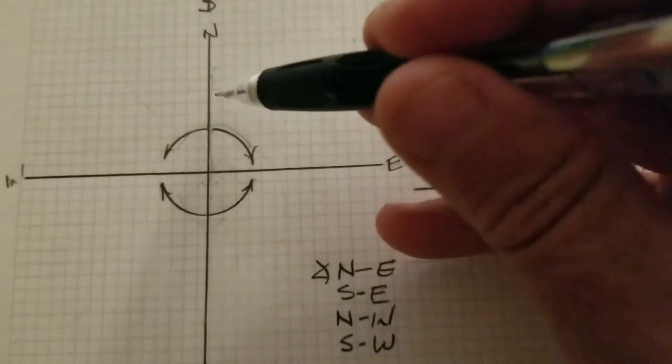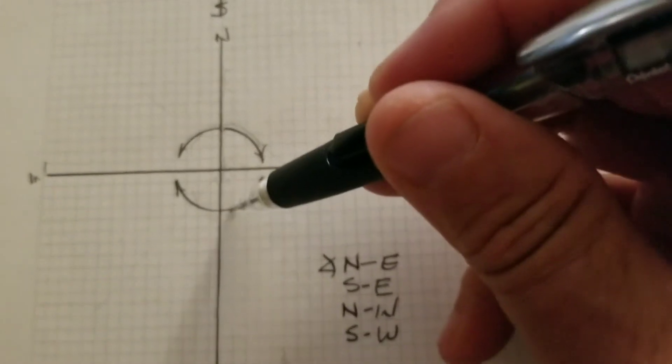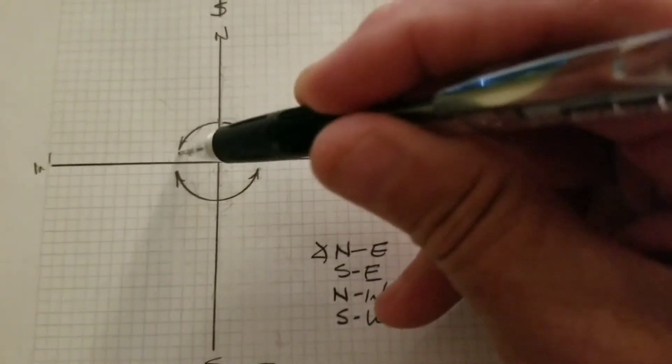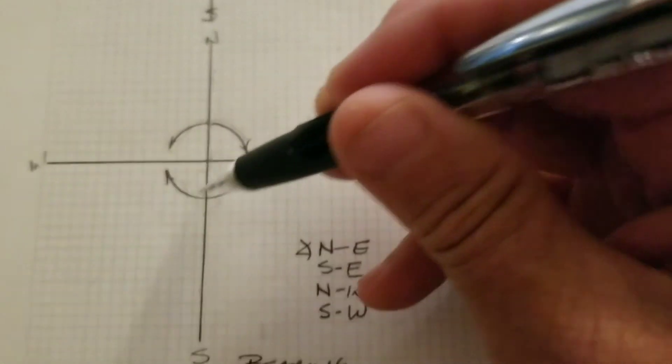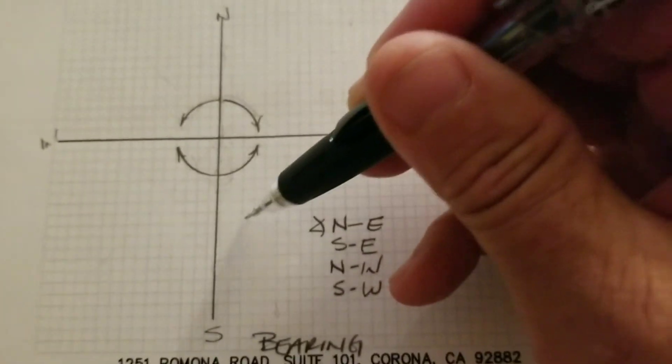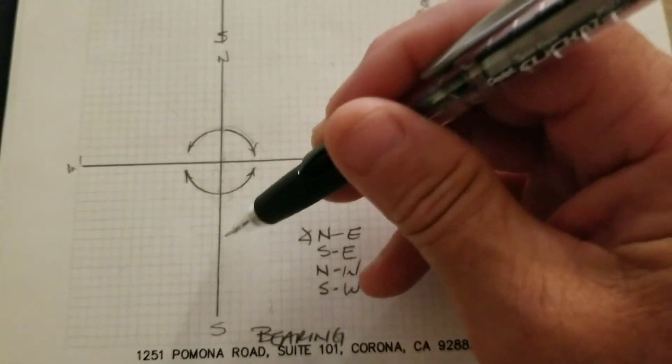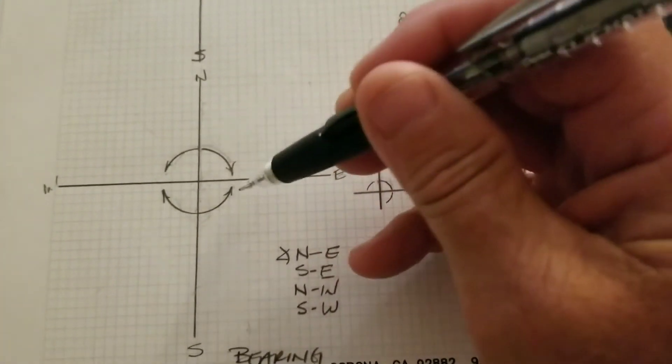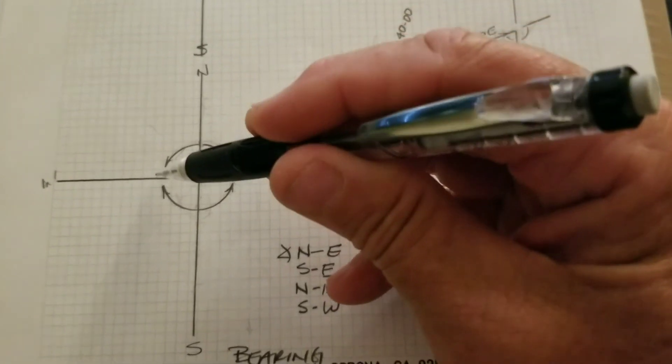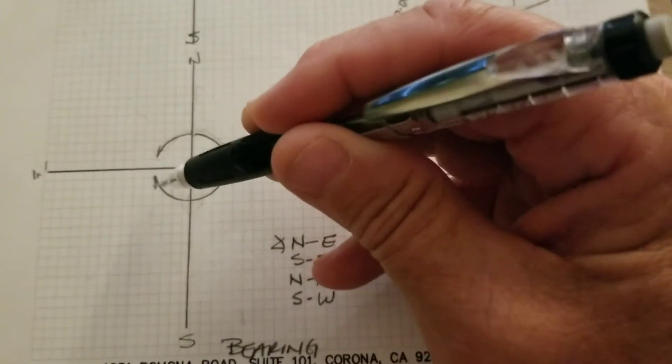A bearing is either a northeast, southeast, northwest, or southwest angle, based off the south line, south line, or the north line. It never goes east to north, or west to north, or west to south.